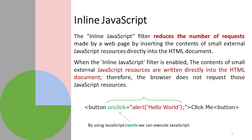The inline JavaScript filter reduces the number of requests made by a web page by inserting the contents of a small external JavaScript resource directly into the HTML document. In inline JavaScript, we can place JavaScript code in an HTML element itself. When the inline JavaScript filter is enabled, the contents of a small external JavaScript resource are written directly into the HTML document. If you have a small code, you can place JavaScript in an HTML element so that resources can be easily incorporated.